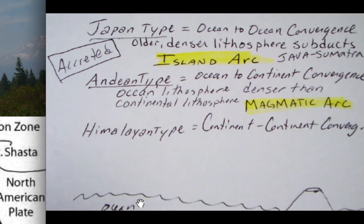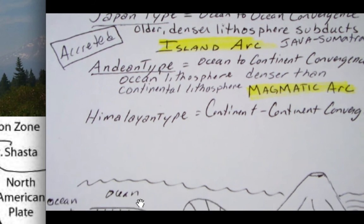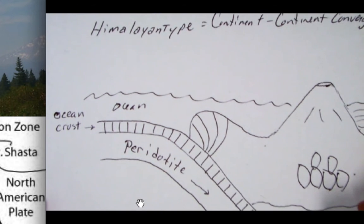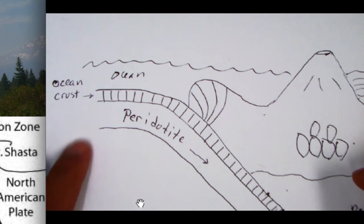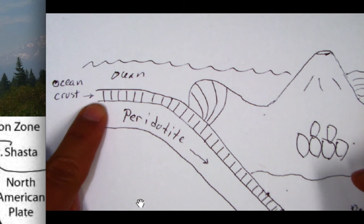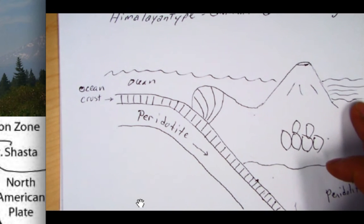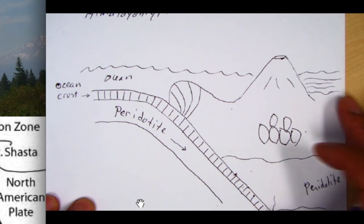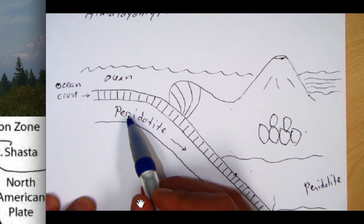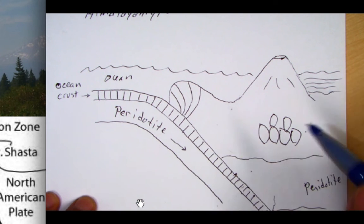Going to our drawing, we want to make a sketch of this type of convergent margin. Here I've already started this sketch, and by convention, we show these vertical lines to indicate oceanic crust. Then here I show the whole ocean lithosphere with a crust plus upper mantle peridotite, and it's going down into the subduction zone.